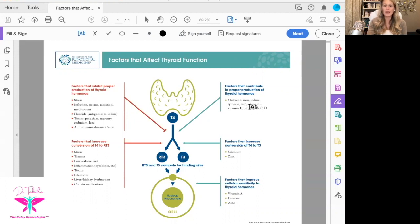Your thyroid hopefully will make T4 if you have enough iron, iodine, tyrosine, zinc, selenium, vitamin E, B2, B3, B6, C, and D. You need all of that.